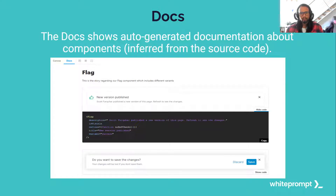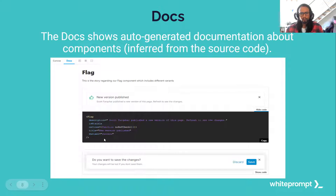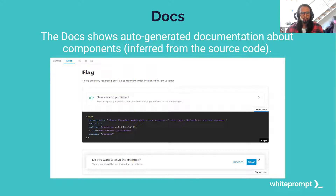As for component documentation, you can explain what a component does. You also have examples — you can see the UI for the component called Flag, its description, and a 'Show Code' button. If you click Show Code, it shows a snippet you can literally copy and paste into your application, as long as you have the library installed. Below that there's more documentation about each property, which I'll show in more detail later.